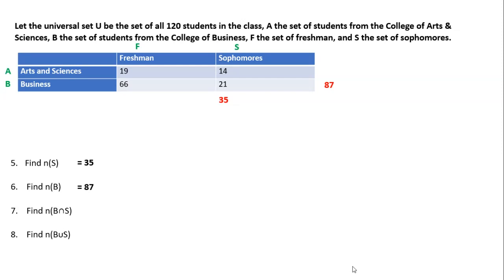Find the intersection of B and S — the business students who are also sophomores. We only want the ones sharing both categories. Looking at our table, the sophomores in Business are 21 students. So the intersection of B and S is 21.